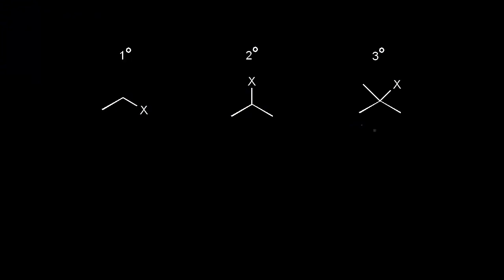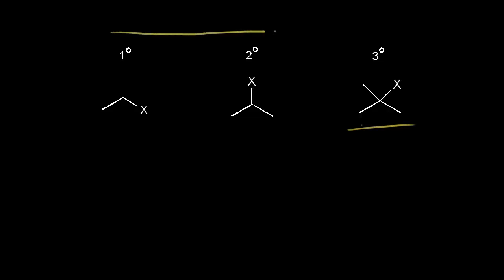A tertiary alkyl halide can undergo an E2 reaction, and as you go from primary to secondary to tertiary, you increase the rate of reactivity in an E2 reaction. To explain why, let's look at the mechanism for a secondary and a tertiary substrate and analyze the products.